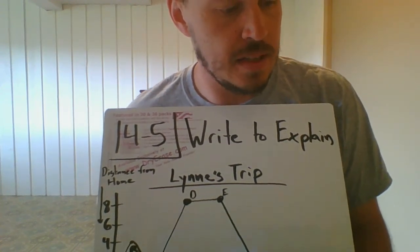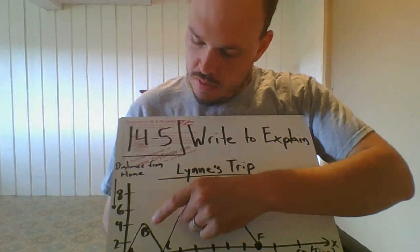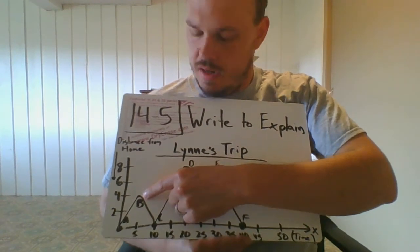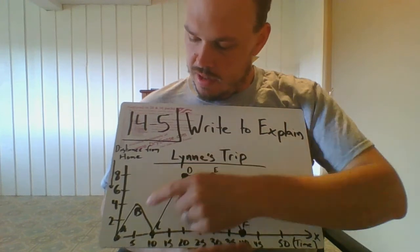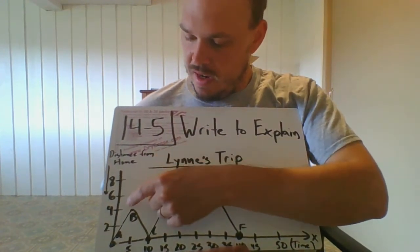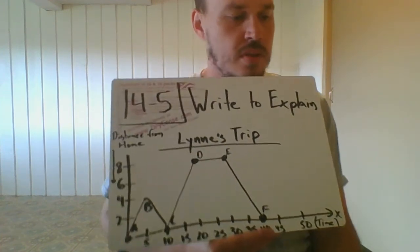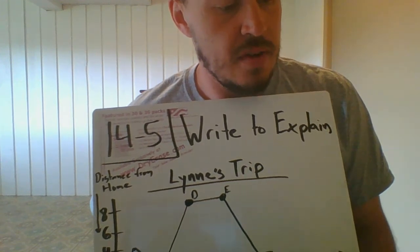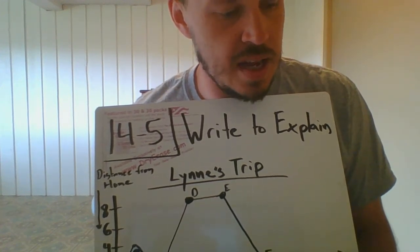Number four: why does point B represent half the distance to the store? Point B is located right here, the store is located there. Two, four, six, eight - eight divided by four is two, so that's halfway to the store.